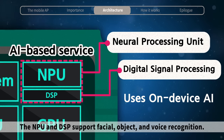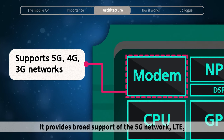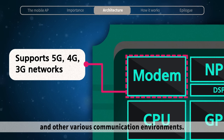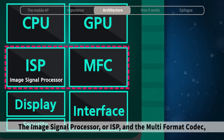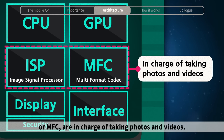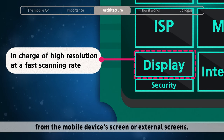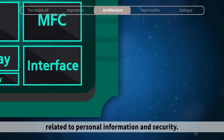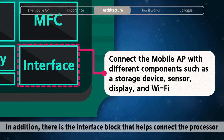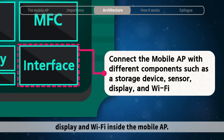The NPU and DSP support facial, object, and voice recognition. There is also the modem inside the mobile AP. It provides broad support of the 5G network, LTE, and other various communication environments. The Image Signal Processor, or ISP, and the Multiformat Codec, or MFC, are in charge of taking photos and videos. The Display Block transmits and receives image and video signals from the mobile device's screen or external screens. The Security Block processes data related to personal information and security. In addition, there is the Interface Block that helps connect the processor and the functions of the storage device, sensor, display, and Wi-Fi inside the mobile AP.